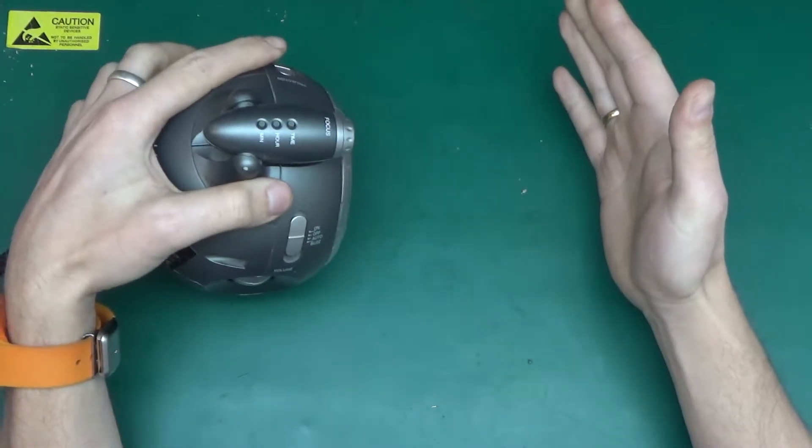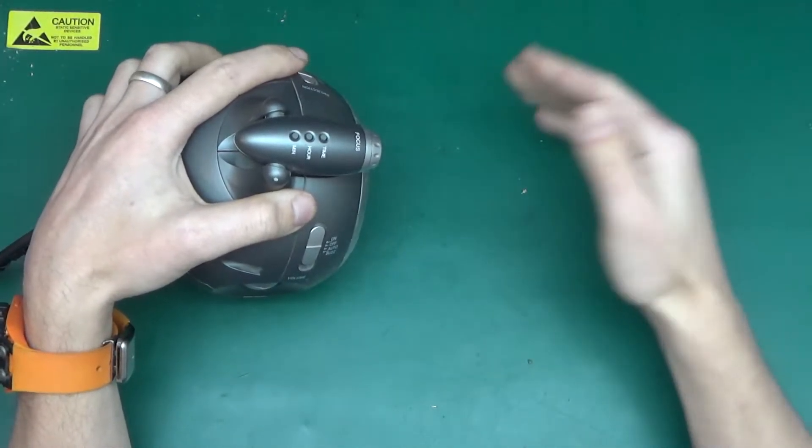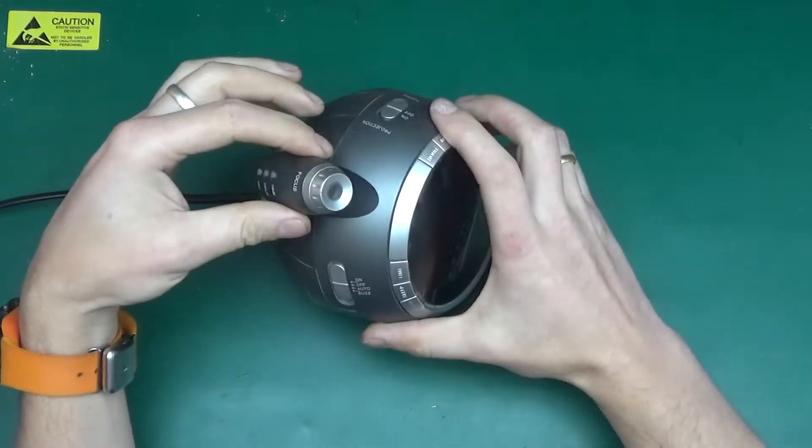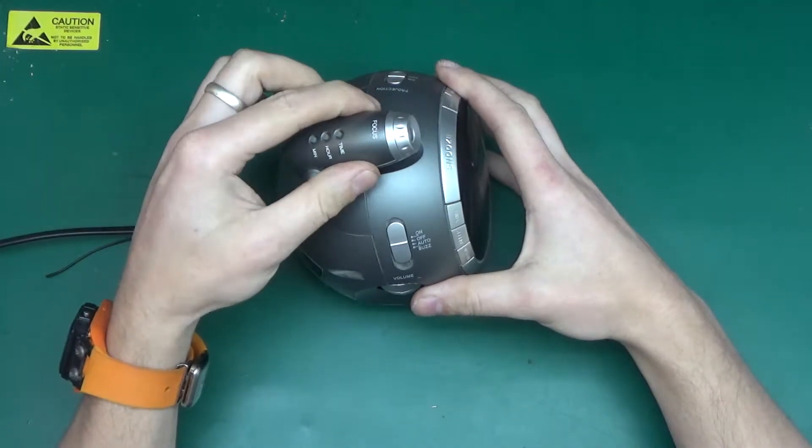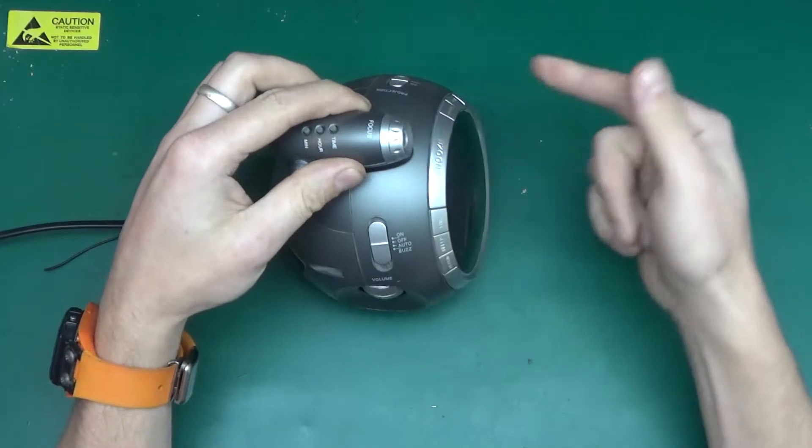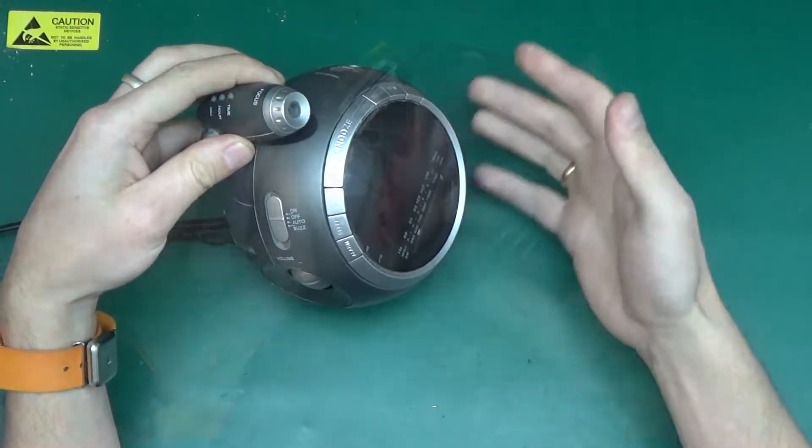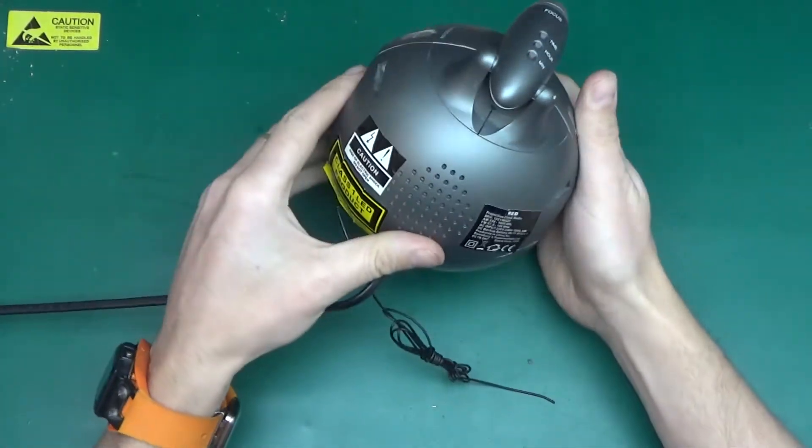It will project time on a wall or whatever that might be. The interesting bit is the projection head has got a separate time clock. It can project a different time to the one that's displayed over here. Let's rip it apart and see how they make those clocks.